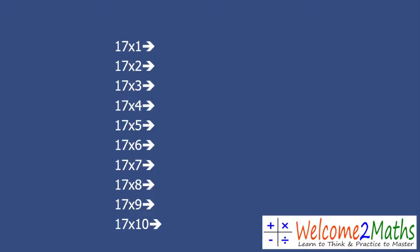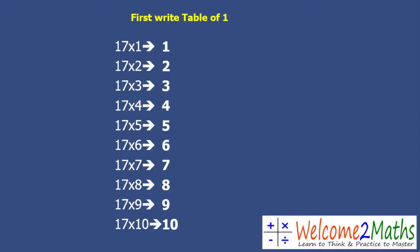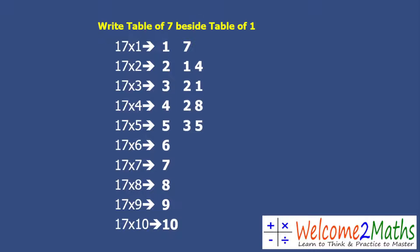For the table of 17, you just need two basic tables — the table of 1 and the table of 7. The first thing is you have to write the table of 1, which is very easy. After that, you write the table of 7 beside the table of 1 in this way.